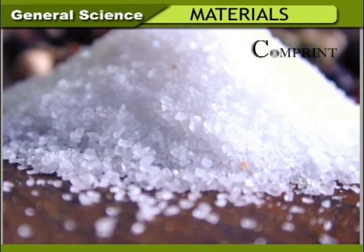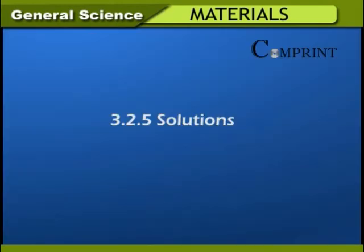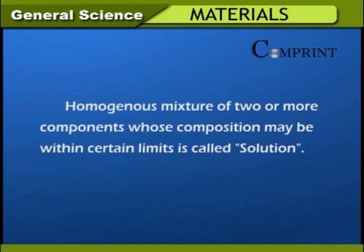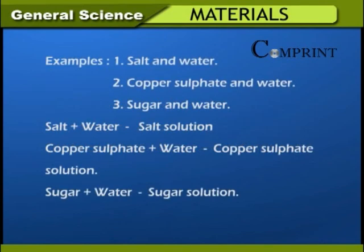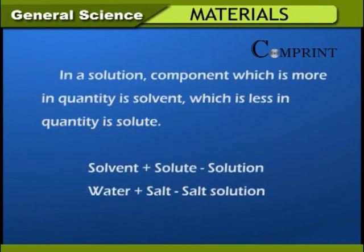Evaporation: Common salt used in daily life is obtained by evaporation of sea water. Salt water is let into tanks; by the heat of the sun, the water evaporates and salt is left behind. Solutions: A homogeneous mixture of two or more components whose composition may vary within certain limits is called a solution. Examples: salt and water, copper sulfate and water, sugar and water. In a solution, the component present in greater quantity is the solvent; the one in lesser quantity is the solute. Solvent + solute = solution.